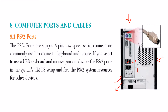First, these two ports you see here in blue and green color — these are PS2 ports. They are very simple 6-pin, low-speed serial connections. Serial connection means data goes one by one, serially. If you choose to use a USB keyboard and mouse, you can easily disable PS2, because nowadays most keyboards and mice come with a USB port.